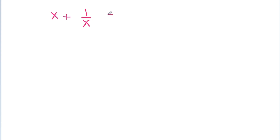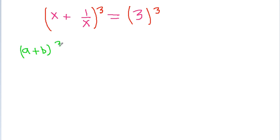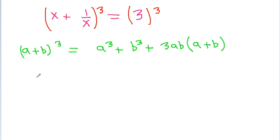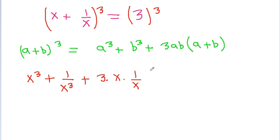Now we have x plus 1 by x is equal to 3, and if we cube both sides, we use the identity: a plus b cubed is equal to a cubed plus b cubed plus 3ab times (a plus b). So we can get x cubed plus 1 by x cubed plus 3 times x times 1 by x times (x plus 1 by x).